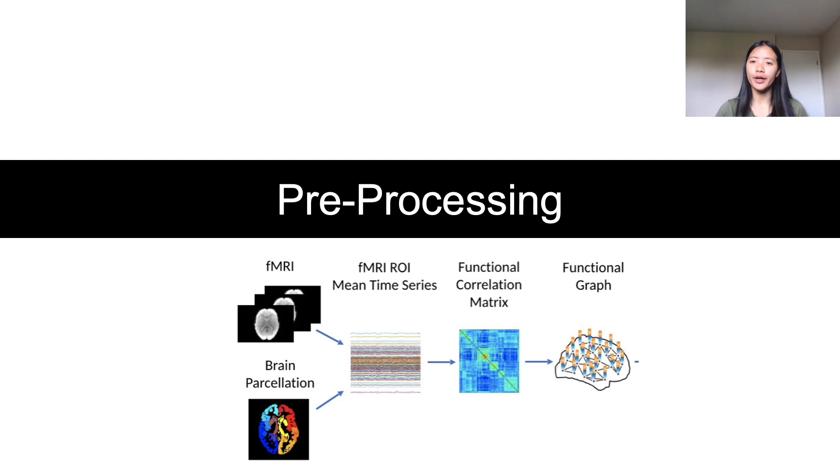Back to the actual neural network, the first stage is the preprocessing, and this is when we take the fMRI images and transform them into a graph that can be inputted into the neural network. To do this, the fMRI brain scans are divided into regions of interest, or ROIs, based on existing brain atlases.